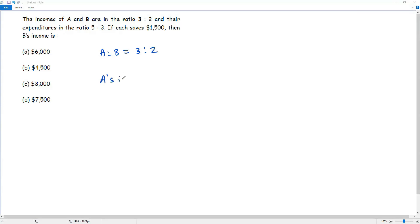To get A's income, I multiply the first term of the ratio, 3, by x, and to get B's income, I multiply the second term by x to get 2x. Now I have A's income and B's income. The goal is to find B's income. Once I get the value of x, multiplied by 2, I'll be getting the income of B. My aim is to find the value of x using the other information.